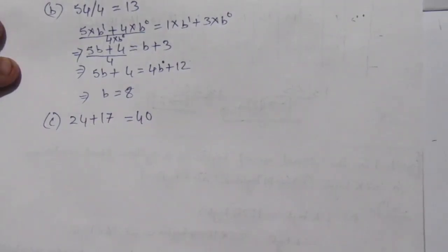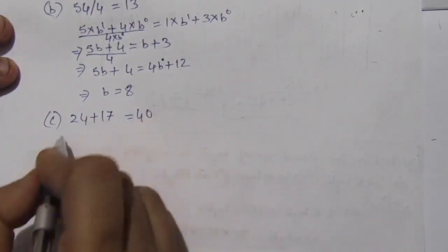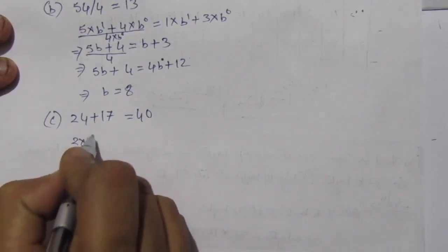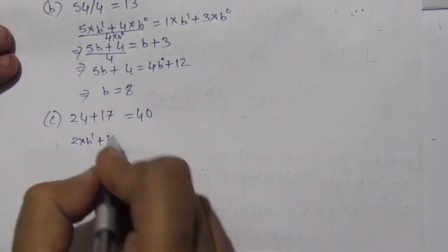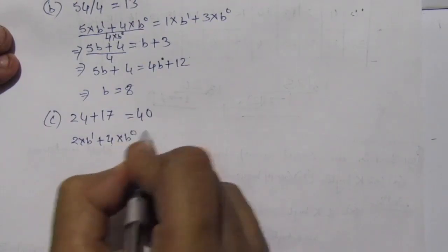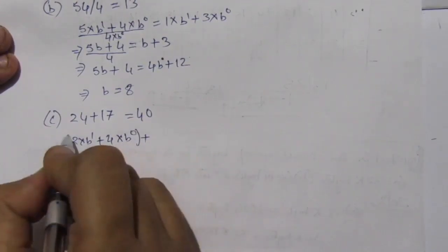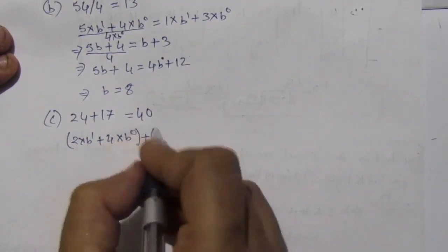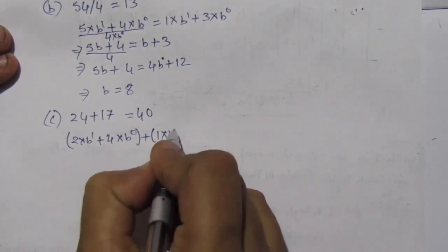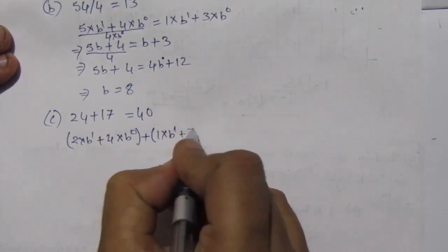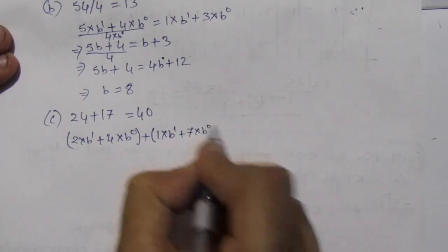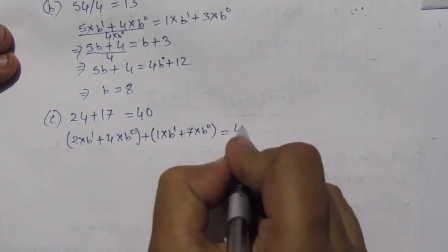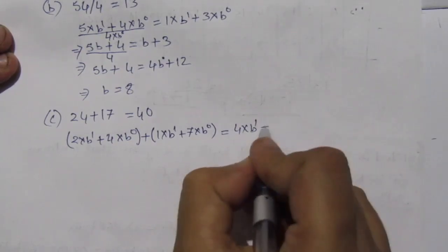Now let us solve the third part. We can rewrite it as 2 × b^1 + 4 × b^0, this is one term, and 1 × b^1 + 7 × b^0 equal to 4 × b^1 + 0 × b^0.